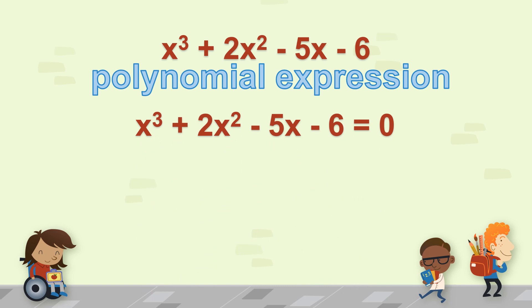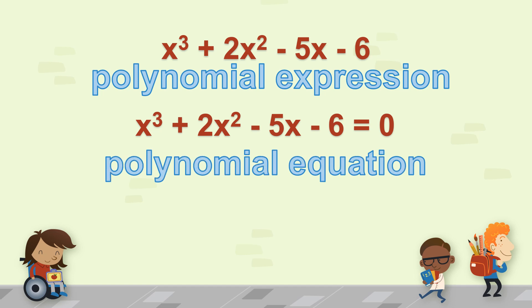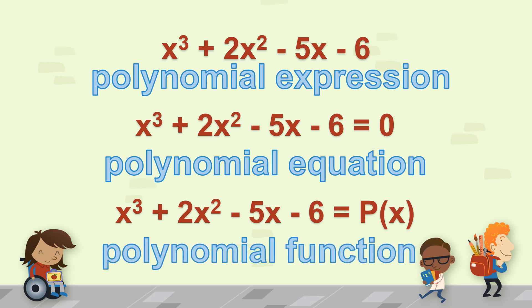x³ + 2x² - 5x - 6 = 0 is an example of a polynomial equation. x³ + 2x² - 5x - 6 = P(x) is an example of a polynomial function. And sometimes, we also write it replacing P(x) as f(x) or sometimes y. So we call it a polynomial function.